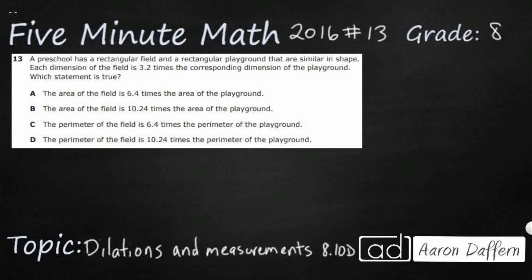So we have a preschool that has a rectangular field and rectangular playground, similar in shape. So let's say they're both rectangles. Each dimension of the field is 3.2 times the corresponding dimension of the playground.